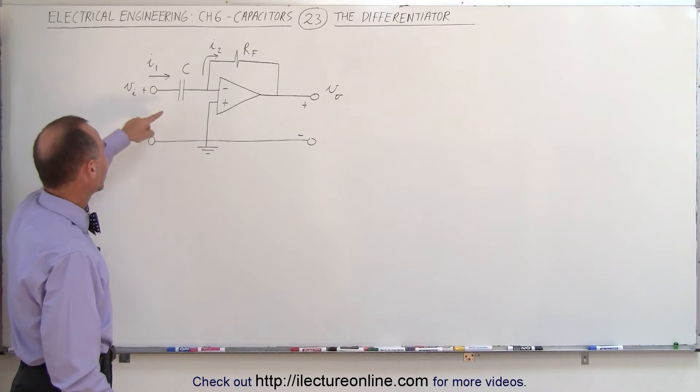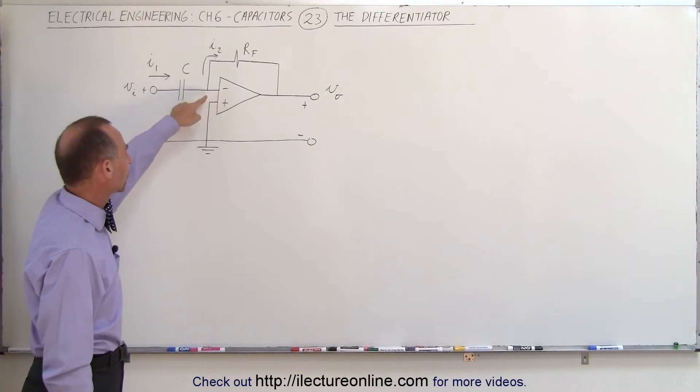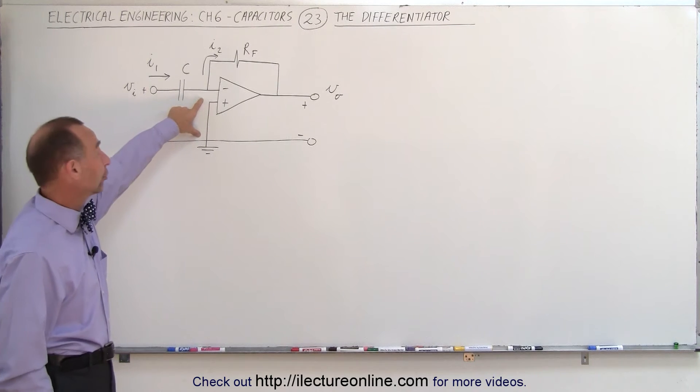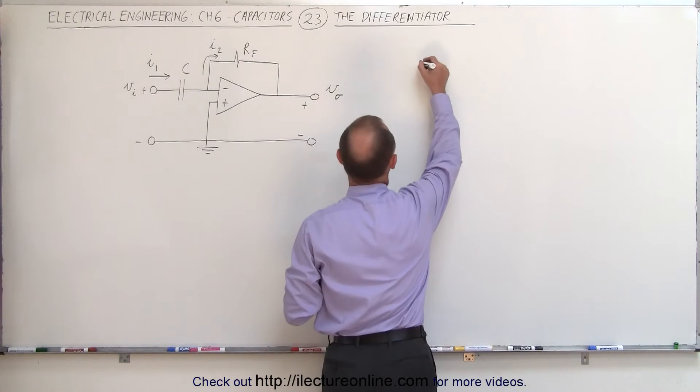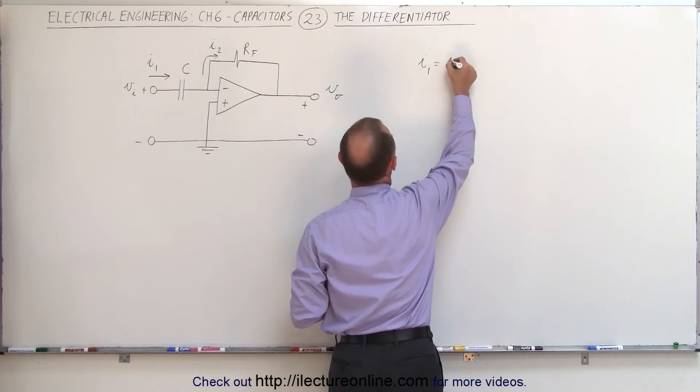Again, what we can see here is that there's no current going from here to here and there's basically zero voltage from there to there. That means that I1 was therefore equal to I2.